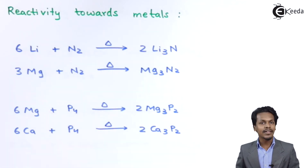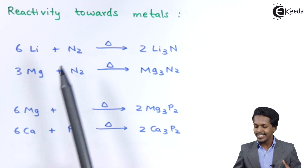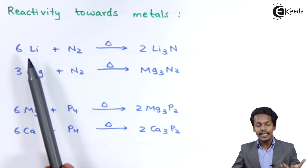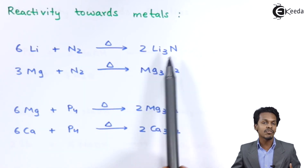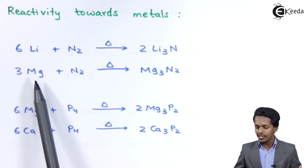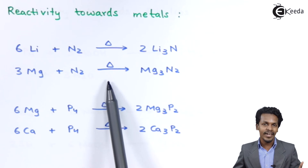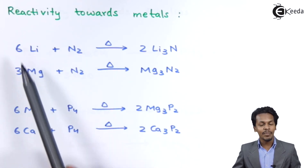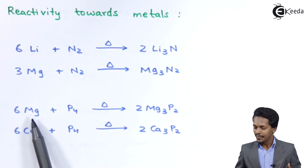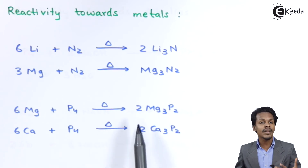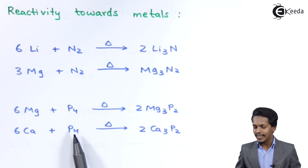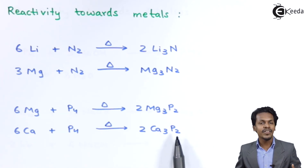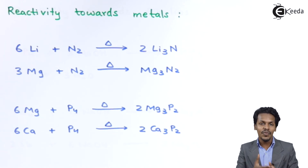The next is the reaction of group 15 elements towards metals. Nitrogen reacts with lithium — an S-block element that is very reactive — to produce 2 moles of Li3N, also known as lithium nitride. Magnesium reacted with nitrogen gives Mg3N2, known as magnesium nitride. Phosphorus reacted with magnesium produces Mg3P2, known as magnesium phosphide. And calcium reacted with P4 (phosphorus) gives 2 moles of Ca3P2, known as calcium phosphide. This was the reaction of group 15 elements with metals.